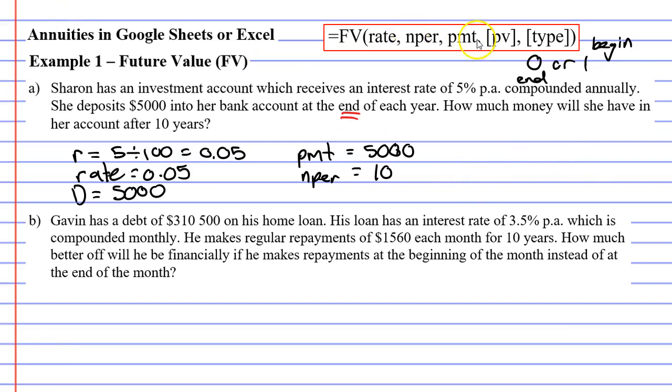By default if you leave these two blank Microsoft Excel or Google Sheets will put the number zero in there automatically. So if you leave these blank it means that your present value was zero dollars and your type is zero as well. Zero meaning that the repayment goes in at the end of the year. This is the case for question A. Hence why we're going to leave these two arguments blank.